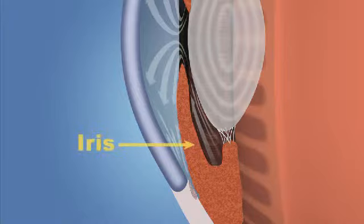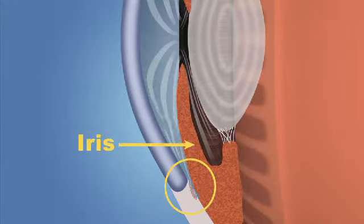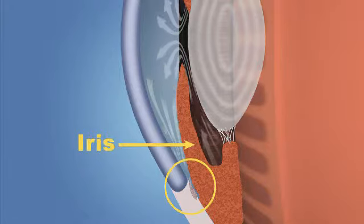The iris, the colored part of the eye, may close off the drainage angle. People of Asian descent and those who are far-sighted tend to be more at risk for developing this form of glaucoma.